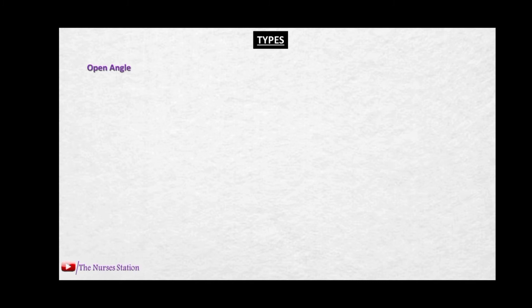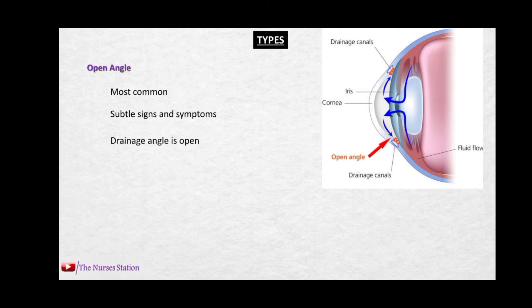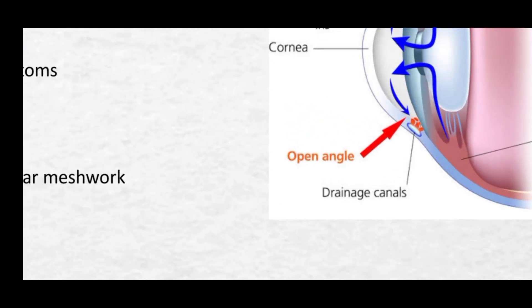There are two types of glaucoma. The first is open angle glaucoma, the most common type. It has subtle signs and symptoms which makes its detection difficult. The drainage angle in this type is open, but there is a problem with the trabecular meshwork. As you can see, the angle between the cornea and the iris is open, but the drainage canals are blocked by the trabecular meshwork, which may be clogged, resulting in obstruction of the canal of Schlemm.